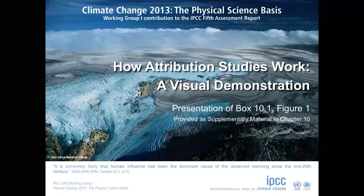The IPCC 5th assessment concluded that it is extremely likely that human influence has been the dominant cause of the observed warming since the mid-20th century, based on the evidence from published detection and attribution studies. This is a visual demonstration to explain the principles underlying many of these studies.